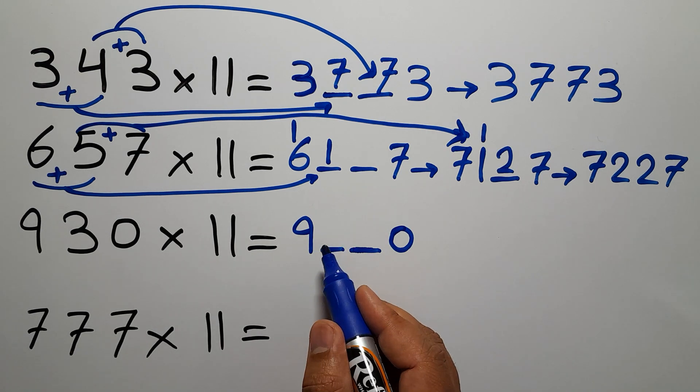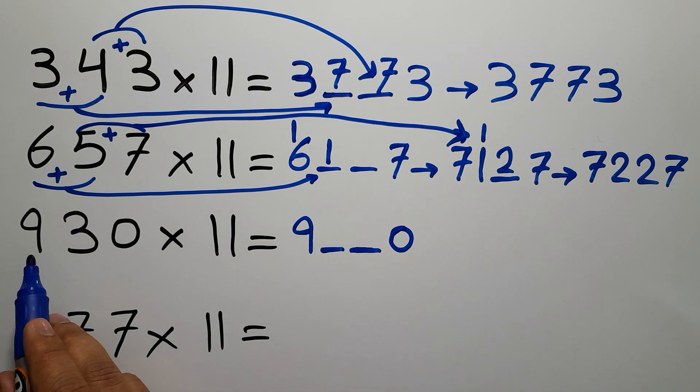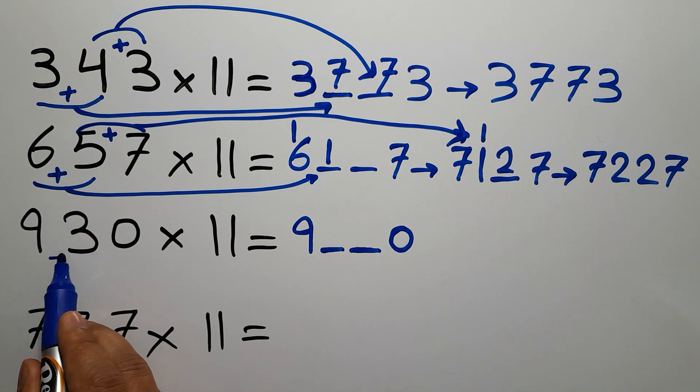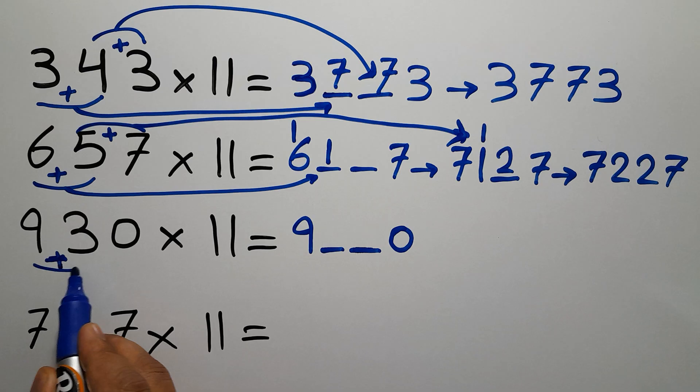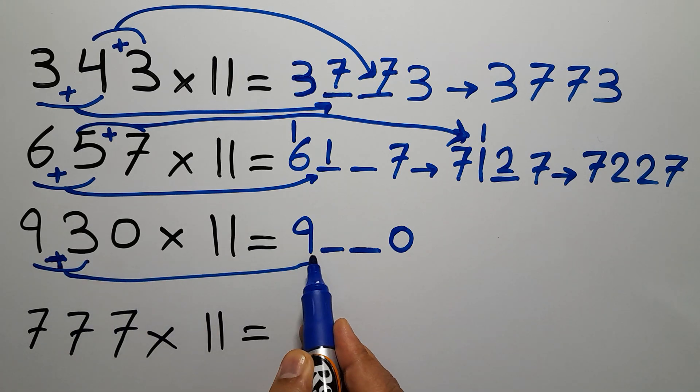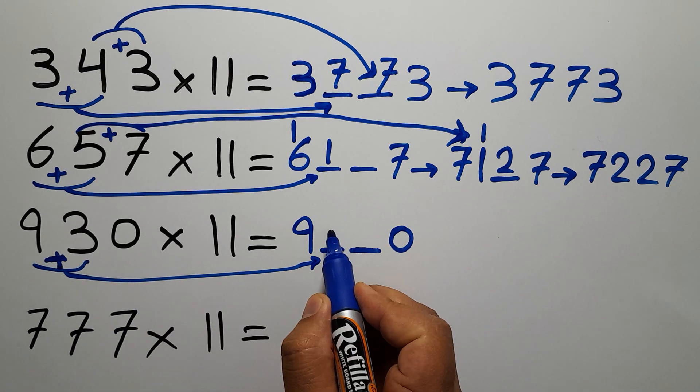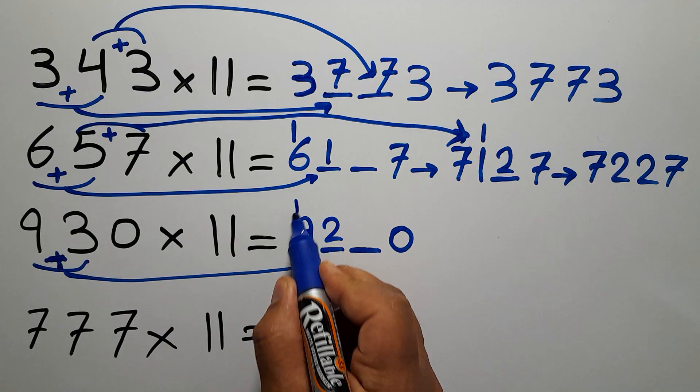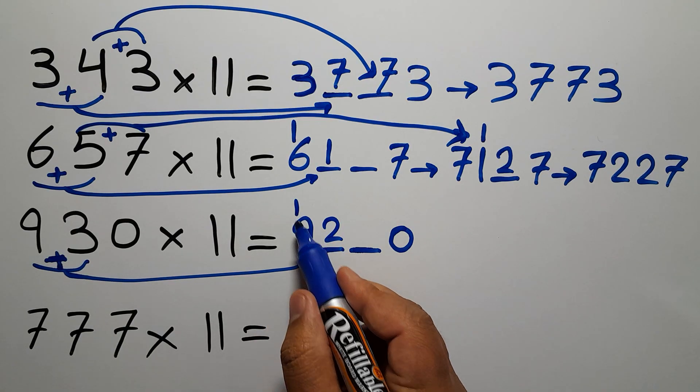To fill the first blank, we add the first two digits, 9 and 3, which gives us 12. So we write 2 here and carry 1 here. 9 plus 1 gives us 10, so we have 10, 2, a blank space, and 0.